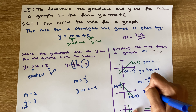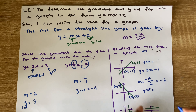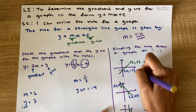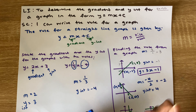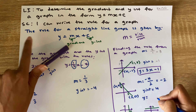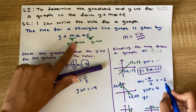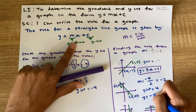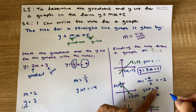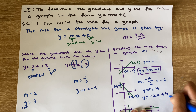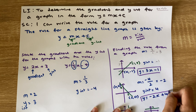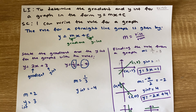And my y-intercept is at 4. So to convert it into this format: y equals my gradient, which is negative 2, so I write negative 2x. Then my y-intercept, which is positive 4, so we write plus 4. And this is now the rule for this graph.